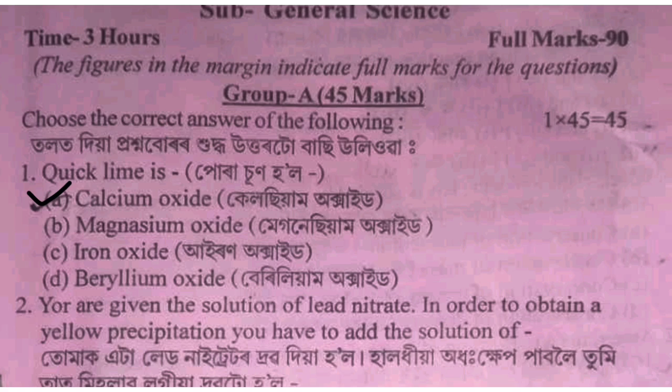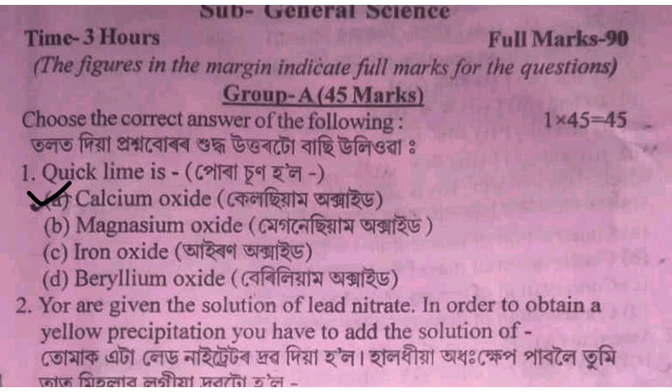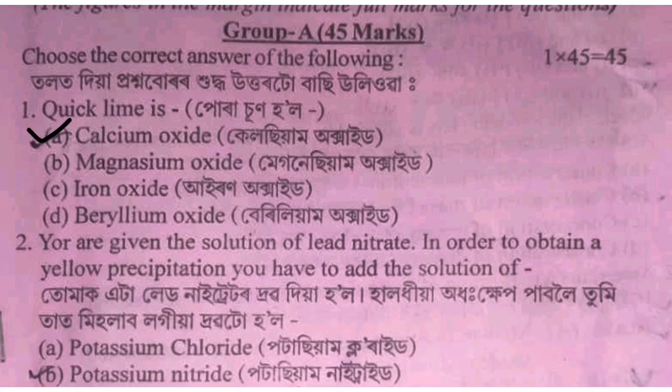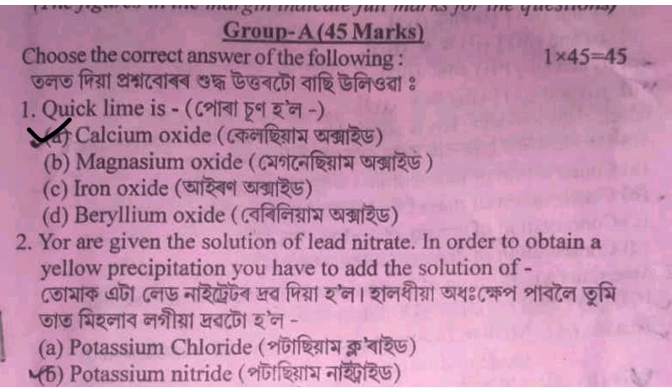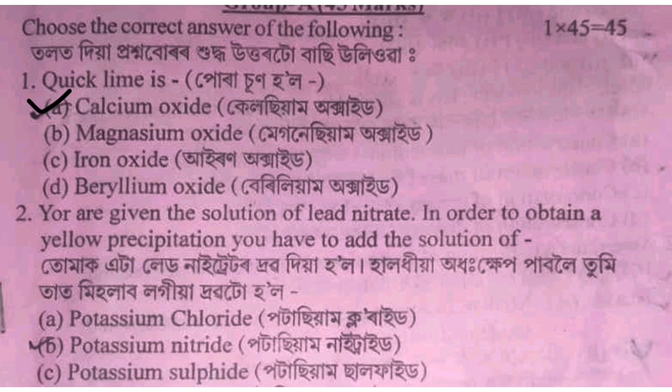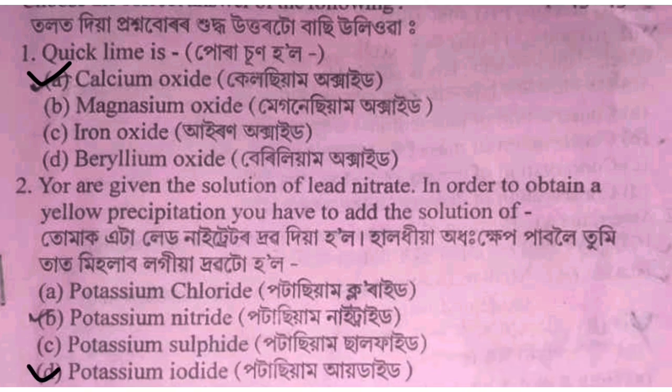Option A to see a bag — calcium oxide. You are given the solution of lead nitrate. In order to obtain a yellow precipitation, you have to add the solution to the lead nitrate.